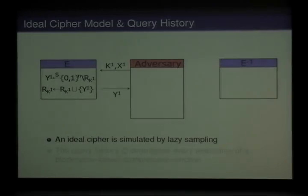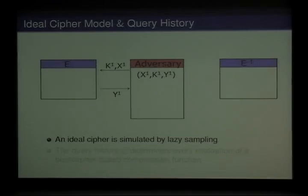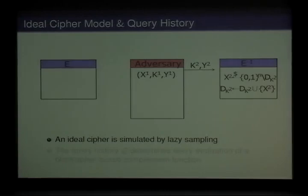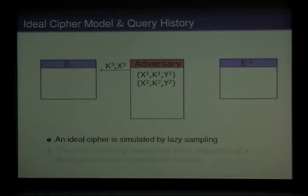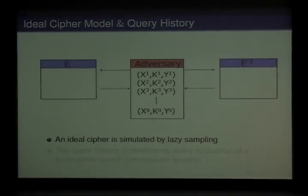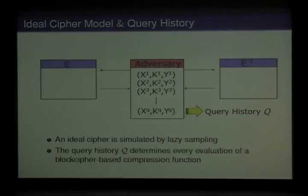Then Y1 is returned to the adversary, and the adversary records a triple that consists of the plaintext, the key, and the ciphertext. The second query is a backward query — a decryption query — and its response is sampled in a similar way. In this way, after making a certain number of oracle queries, say Q queries, the adversary obtains a set of Q query-response pairs. This set is called the query history, and the query history determines every evaluation of a block cipher-based compression function.